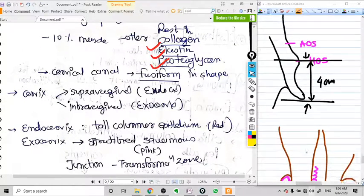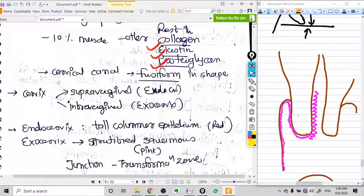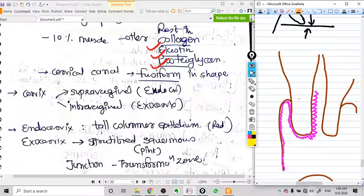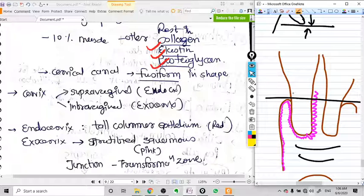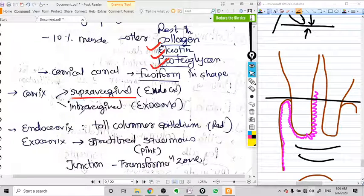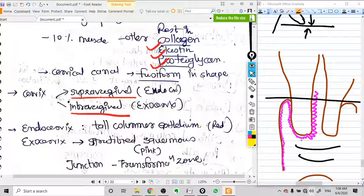You can divide the cervix into two parts: the supravaginal cervix, which is the part above the vagina. This is the vagina, so the cervical part above the vagina is supravaginal cervix, and below the vaginal end it is called infravaginal cervix or exocervix.